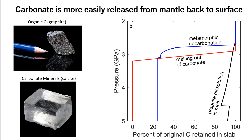This figure is generated from high-pressure experiments conducted on graphite and carbonate under mantle conditions. The black curve shows graphite retention, while the red and blue curves show carbonate retention. This figure shows that carbonate is more efficiently released from subducting slabs compared to graphite. This means that carbonates subducted into the mantle are more easily recycled back to the surface compared to graphite, which opens up the possibility of driving carbon isotope excursions by fractionating graphite and carbonate in the mantle.